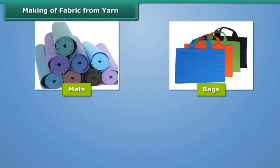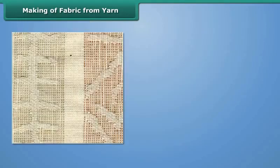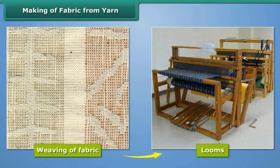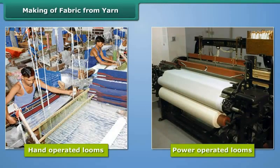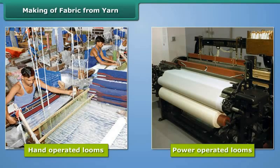Making of fabric from yarn: Fabric is made by weaving and knitting the yarns. Weaving of fabric is done on looms. Looms are of two types: hand-operated looms and power-operated looms. You can also make a mat with a few thin ropes — take ropes of yellow and blue color and weave the yellow and blue strips one by one. Similarly, two sets of yarn are woven to make a fabric.